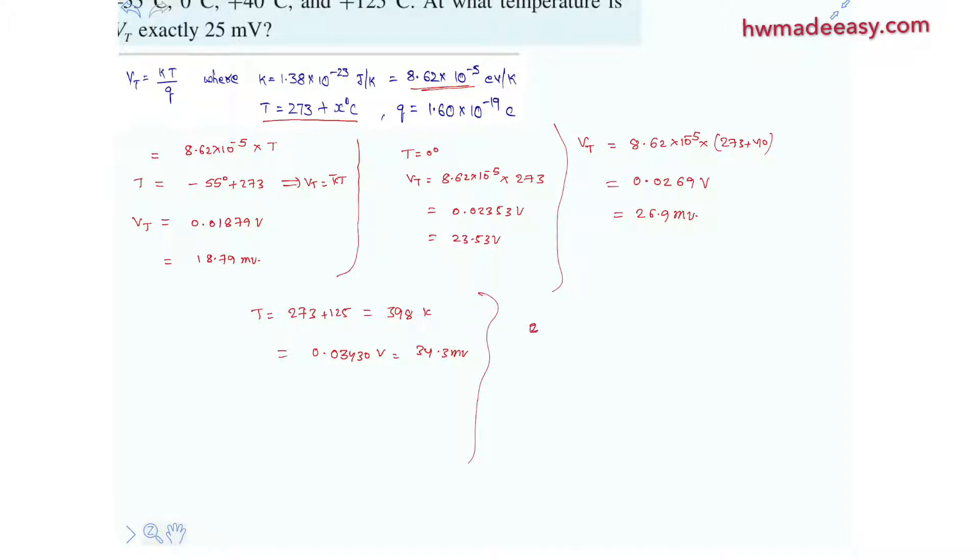So 25 millivolts is 0.025 equals to 8.62 multiplied with 10 power minus 5 multiplied with 273 plus x degree celsius. Here x is in degree celsius. So let's solve for this. 273 plus x is equals to 0.025 divided by 8.62 multiplied with 10 power minus 5. How much is it?